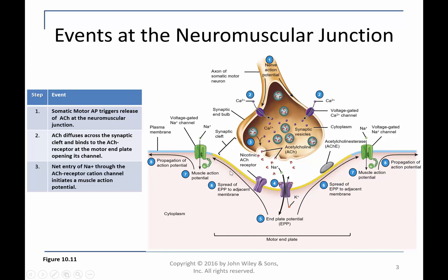That spread of the end plate potential to the periphery of the neuromuscular junction engages voltage-gated sodium channels on the muscle cell membrane. The opening of these channels triggers a muscle cell action potential, which can then propagate towards both ends of the muscle cell.